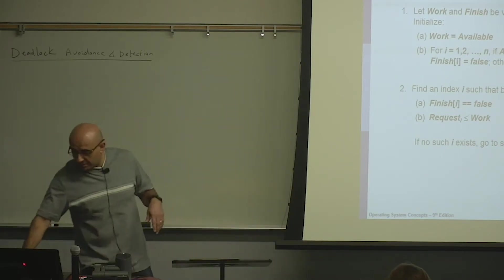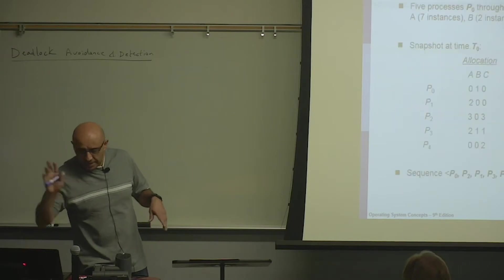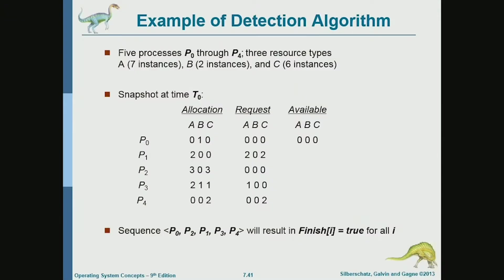The algorithm is going to be very much the same as the avoidance version. But here, we no longer have the notion of maximum need and projected need. All what we have is current allocation and current request. So all what we analyze in the detection version is what the processes currently have, what is allocated to each process, and what the processes are currently requesting.